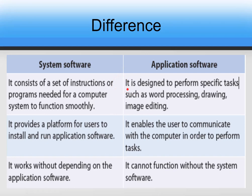If system software is not there or has a problem, the entire system will not work smoothly. Application software, since it performs a specific type of job, has nothing to do with the working of the computer system itself. System software provides a platform for users to install and run application software, whereas application software only enables the user to communicate with the computer in order to perform tasks.